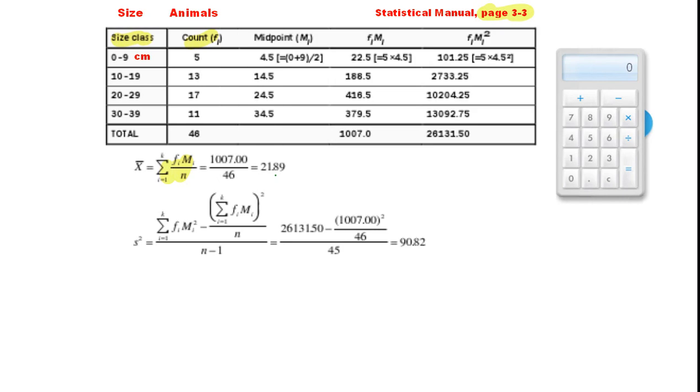To work out the mean, we first of all start by calculating the midpoint of each category. This is the halfway point. For the first size class, 0 to 9, 0 plus 9 divided by 2 gives us 4.5. 10 plus 19 divided by 2 gives us 14.5, and so on for the other two size classes.